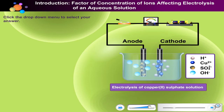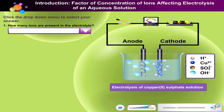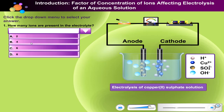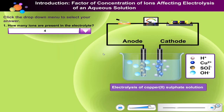Question number 1: How many ions are present in the electrolyte? Question number 2: Name the ions which move towards the anode.